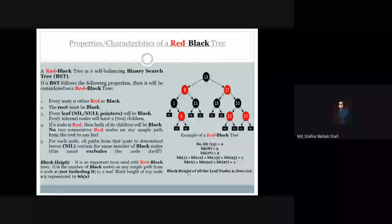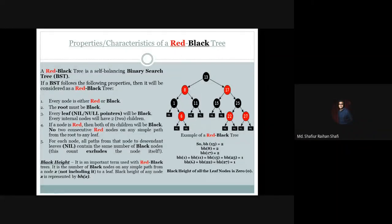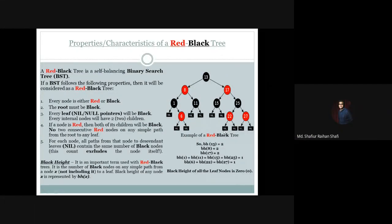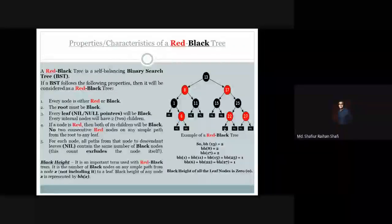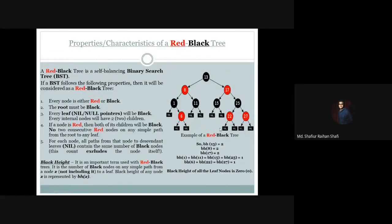One observation about black height: the black height of all leaf nodes is 0. This is because if we start from a leaf node and we have already reached it, the total count of black nodes is 1 (the leaf itself is black), but since we exclude the node itself, 1 minus 1 equals 0. That is why in a red-black tree, every leaf has a black height of 0.